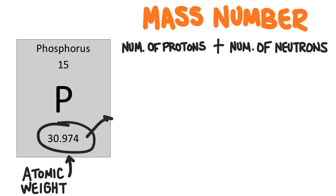For now, just round this to the nearest whole number and that's the mass number of the most common form of that element. We can use this number to determine the number of neutrons in an atom.